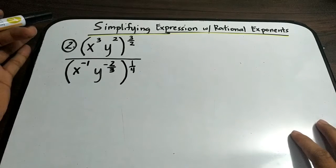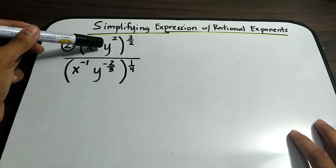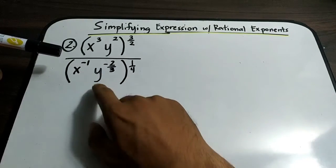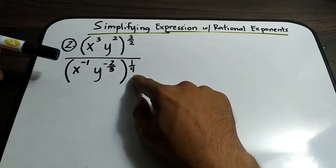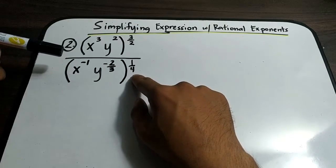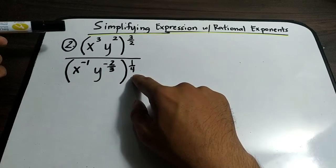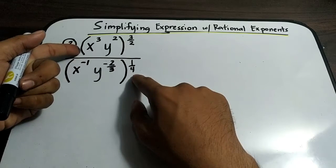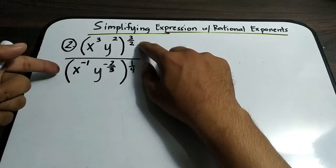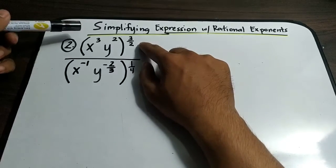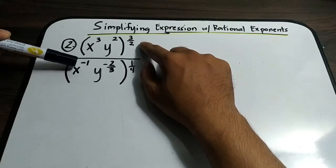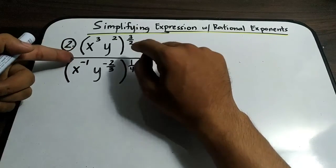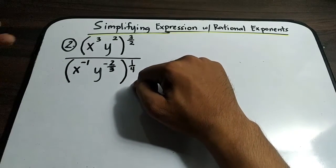Now for our second example, we have x raised to 3, y squared, raised to 3 over 2, all over the quantity of x raised to negative 1, y raised to negative 2 over 3, raised to 1 over 4. The numerator is enclosed in parentheses raised to 3 over 2, and same with the denominator raised to 1 over 4. Before simplifying, you need to eliminate the exponent outside the parentheses in both numerator and denominator.